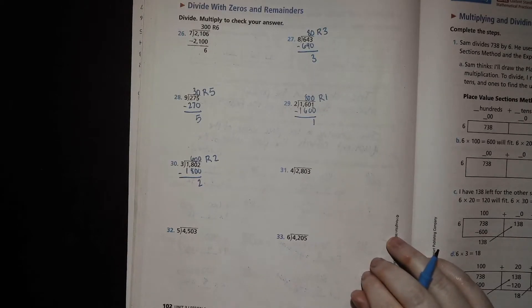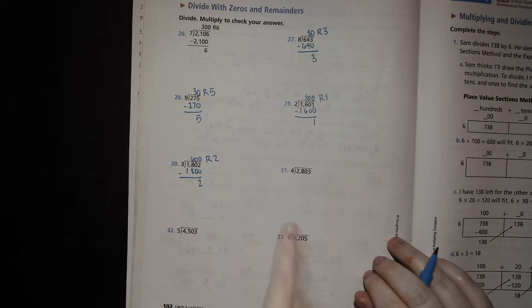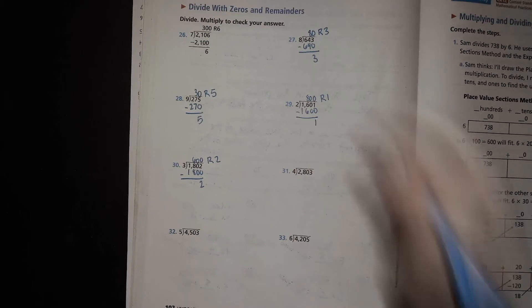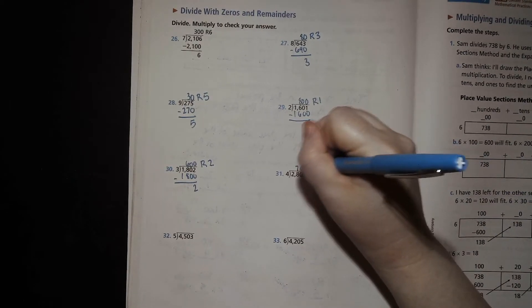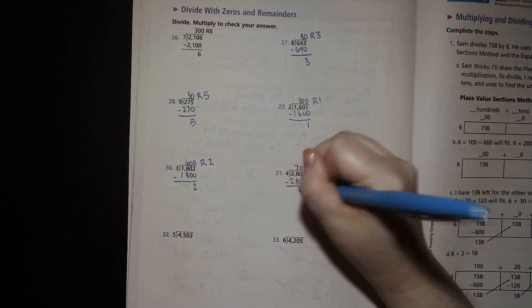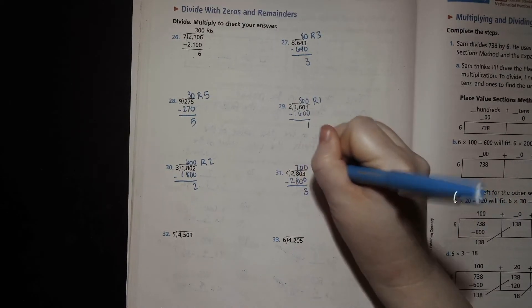4 goes into 2803. How many times? Well, 4 times what is 28? 4 times 7 is 28. So 4 times what is 2800? That has to be 700. 2,800. Subtract. You got 3 left over. Remainder 3.